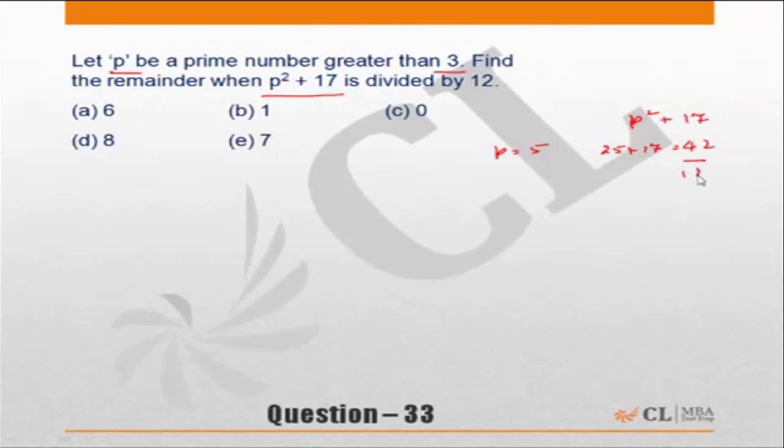When this is divided by 12, what is the remainder? 12 goes into 42 three times (36), so the remainder is 6. Take another prime number, p equal to 7: that's 49 plus 17, which is 66. 66 divided by 12, remainder is 6. Correct answer is choice (a).